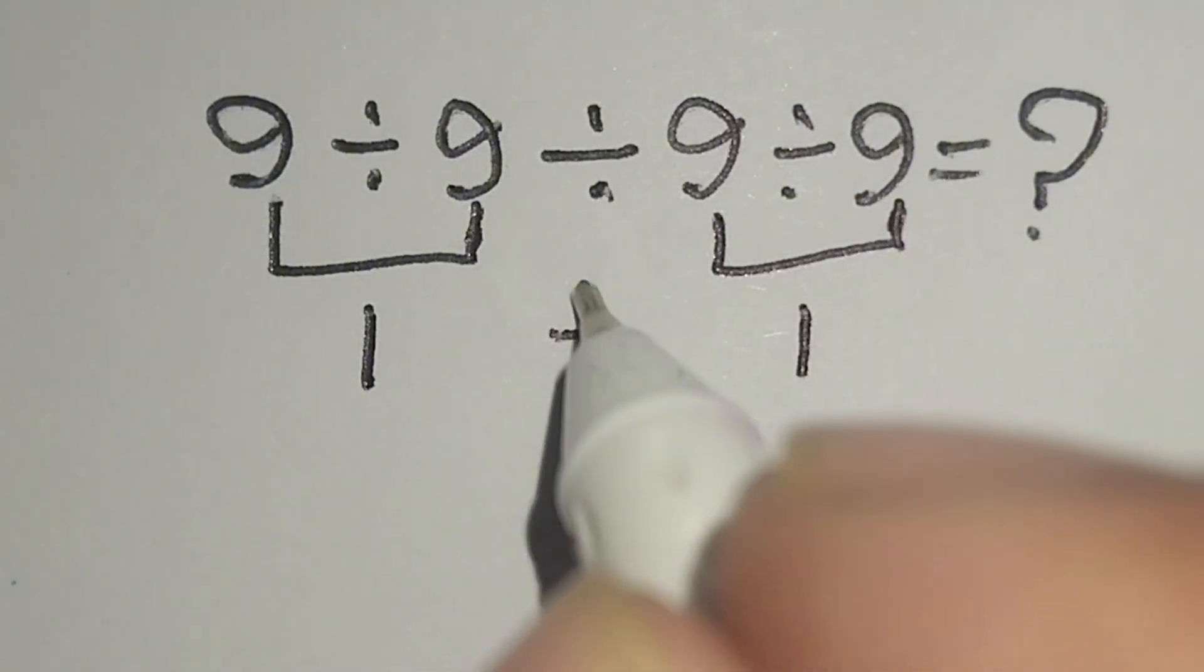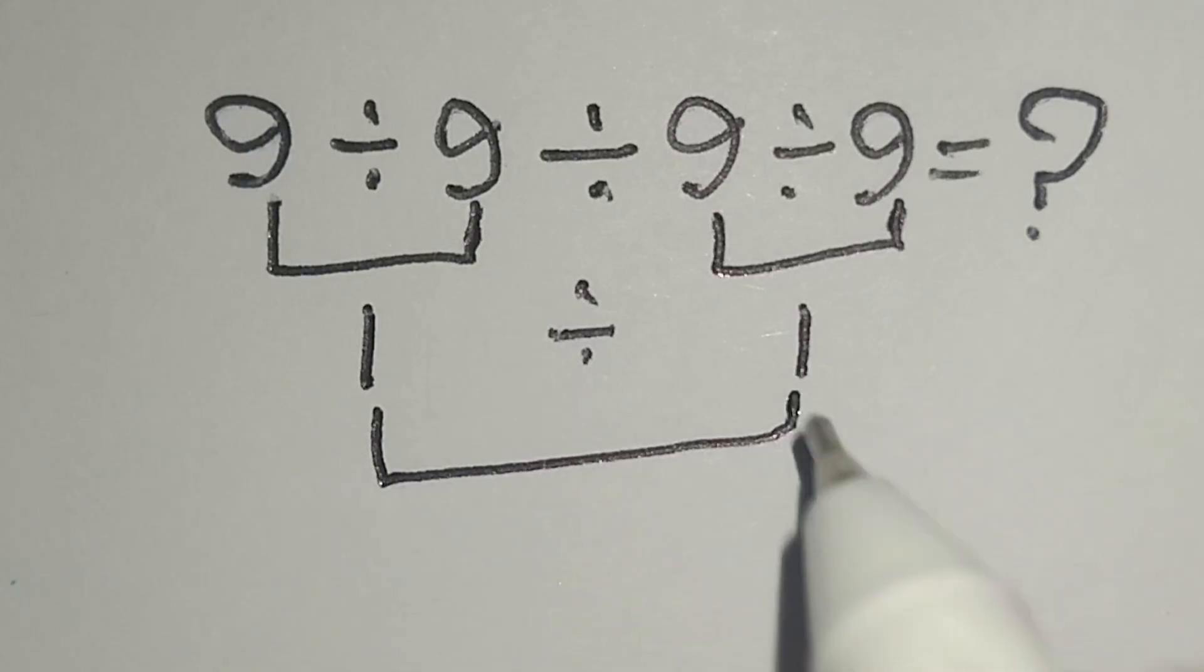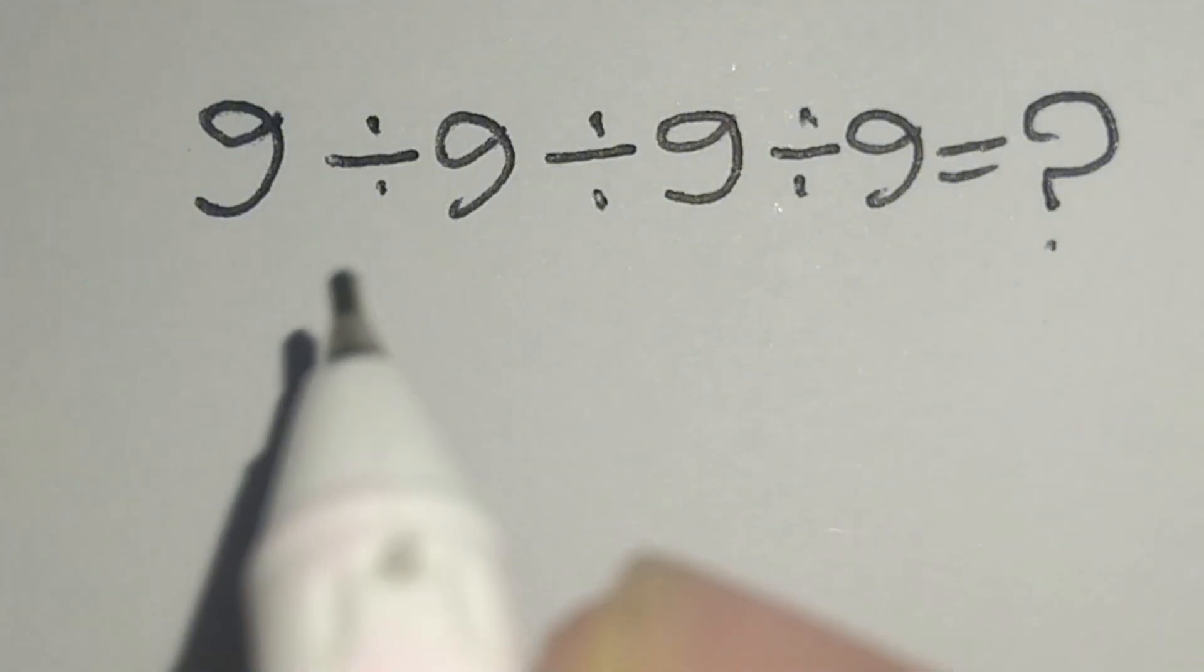This division here, 1 divided by 1 gives us 1, but it is not correct. Now I will solve this math correctly.